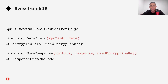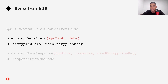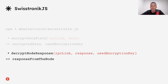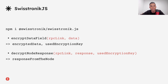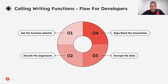SwissTronic.js is a JavaScript library created to help you send encrypted transactions, adding an extra layer of confidentiality when interacting with the SwissTronic network. This library has two main functions. The first one is 'encryptDataField,' which allows you to encrypt the function selector and function arguments to send transactions with encrypted data. The second one is 'decryptNodeResponse,' which allows you to decrypt the responses from nodes every time you make a call to retrieve data from the network. When interacting with the network, there are only two types of actions: calling writing functions that add, edit, or delete data on the smart contract, and calling reading functions that simply retrieve data from the smart contract.